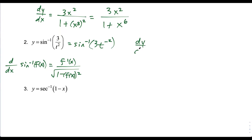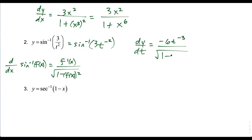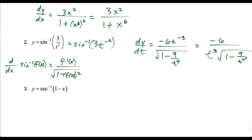We're finding dy/dt — making sure to use the correct notation since the variable is t, not x. The derivative of the inside function 3t to the negative 2 is negative 6t to the negative third by the power rule. This goes over 1 minus the inside function squared. Squaring 3 over t squared gives 9 over t to the fourth, so we have negative 6 over t to the third, over the square root of 1 minus 9 over t to the fourth.